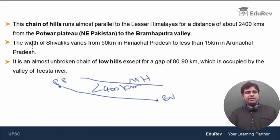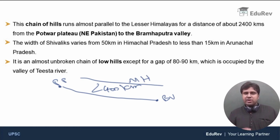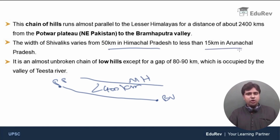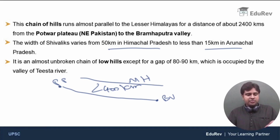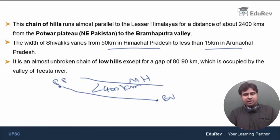The width of the Shivaliks varies from 50 kilometers in Himachal Pradesh to less than 15 kilometers in Arunachal Pradesh. So the width of the Shivaliks is highest in Himachal Pradesh, and by the time we reach Arunachal Pradesh, the width reduces to less than 15 kilometers.